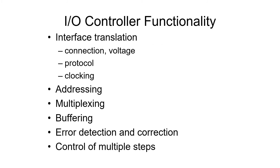The I/O controller is responsible for several different activities. First is interface translation — I/O devices do not communicate in the same manner as the bus. The bus has its own protocol, and the I/O devices have their own protocols. Most I/O devices have a serial connection, whereas the bus is very parallel. There is also a difference in speed — some I/O devices are very slow, like the mouse, which doesn't send much information, whereas the bus runs very fast.